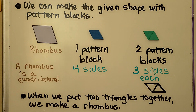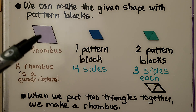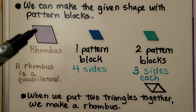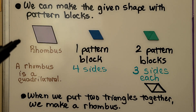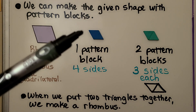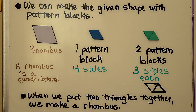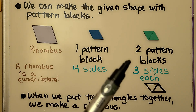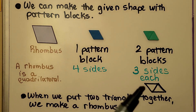We can make the given shape with a pattern block or pattern blocks. Here we have a rhombus. A rhombus is a quadrilateral. We can make it with one pattern block — it has four sides. Or we can make a rhombus with two pattern blocks — triangles. We put two triangles together and we can make a rhombus.